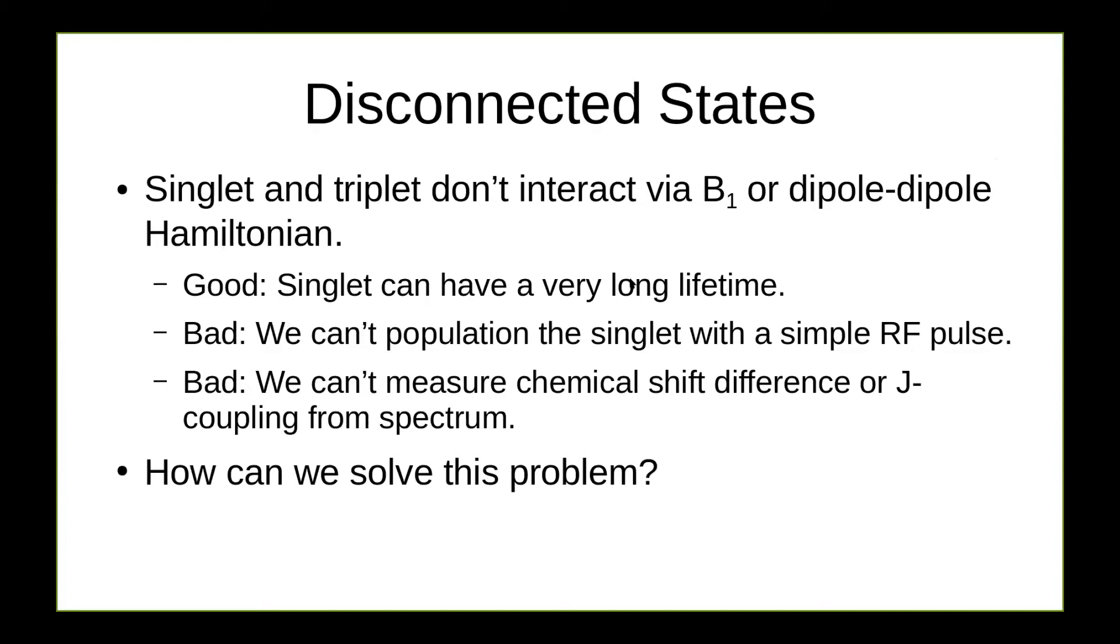So now the singlet and triplet don't interact via B1 or dipole-dipole Hamiltonian any longer. And this is due to the symmetry difference between the singlet and triplet states. This is both a good thing and a bad thing. The good thing is that the singlet can now have a very long lifetime because it's no longer connected to some of these relaxations. Unfortunately, it's also bad because we can't populate the singlet state with a simple RF pulse. Another thing is that we can't measure the chemical shift difference or J coupling anymore from the spectrum because all of that information is lost. So how can we solve this problem?